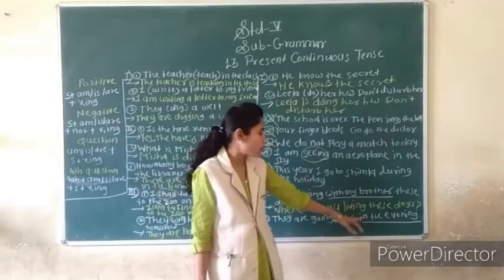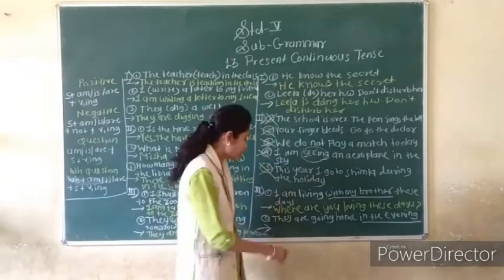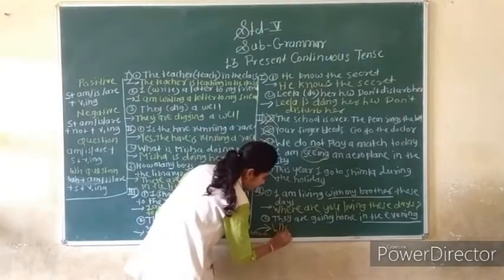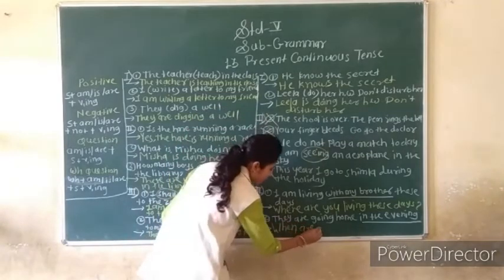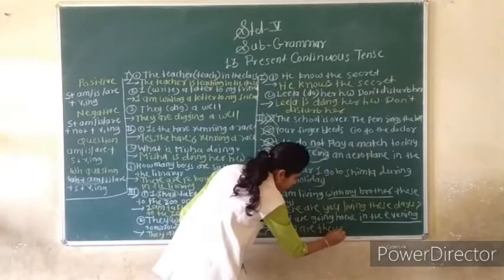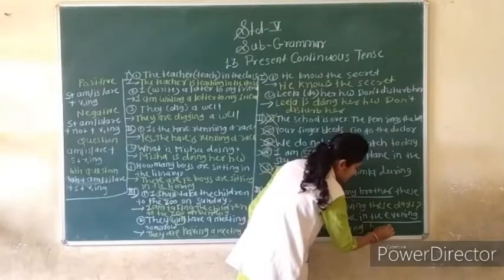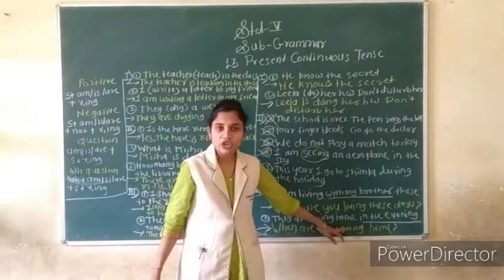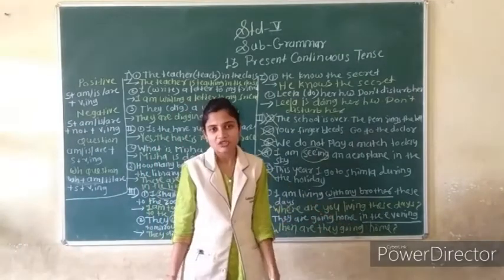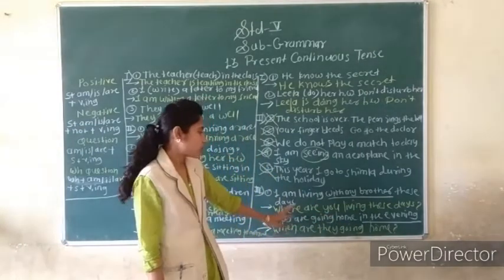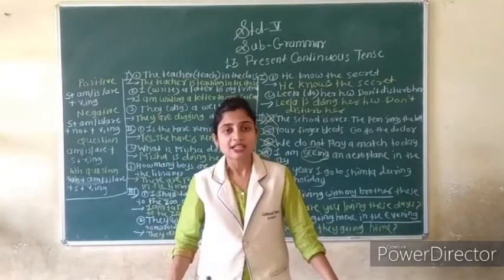They are going home in the evening. Underlined: in the evening. WH word is 'when'. Question: When are they going home? Answer: They are going home in the evening. Like this you can solve — use WH word + is/am/are + subject + verb+ing.